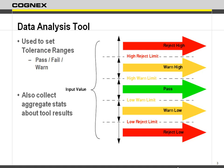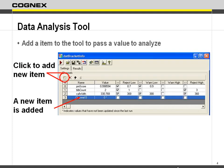A value comes in and you decide whether it should be a warning — either high or low — or a reject high or low. So you're setting your limits with this tool. It can also get aggregate statistics about the tool, so you can track how many recent results are coming back to have some type of statistical information.